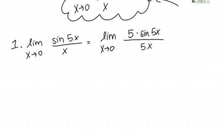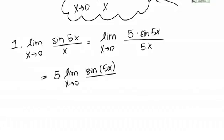I've multiplied by 5 on the top and the bottom. Now I'm going to pull the 5 on top out front. This gives 5 times the limit as X goes to 0 of sine of 5X over 5X. Now I have this in the form I was wanting — the same quantity inside the sine and in the denominator of the fraction — so I can use this limit law.